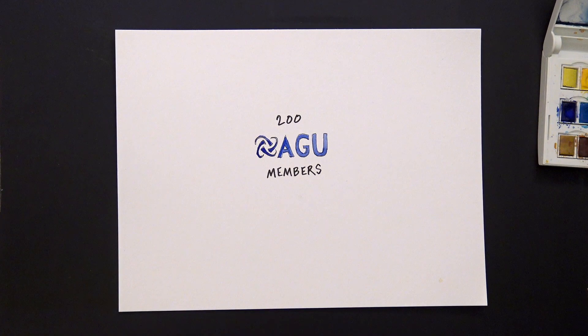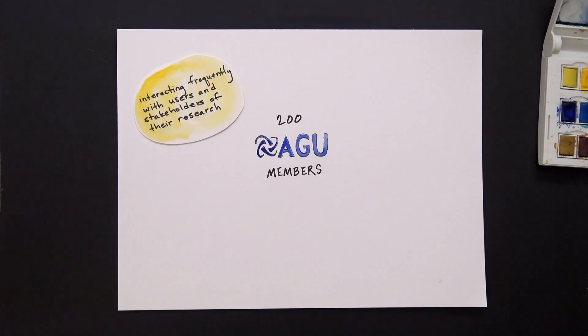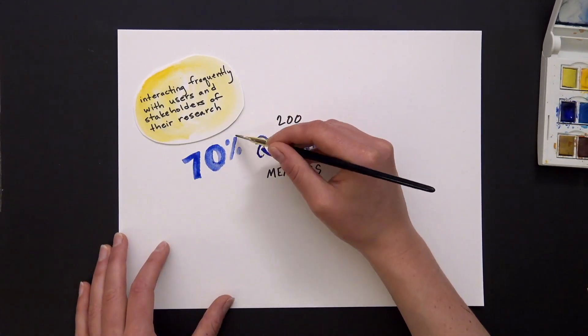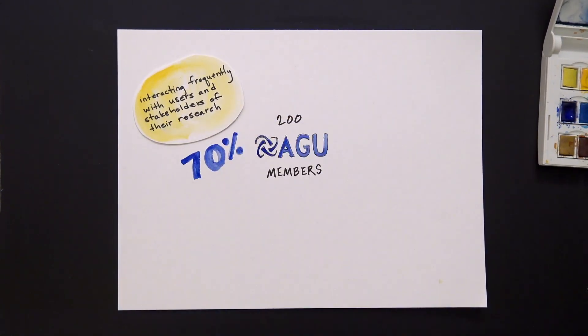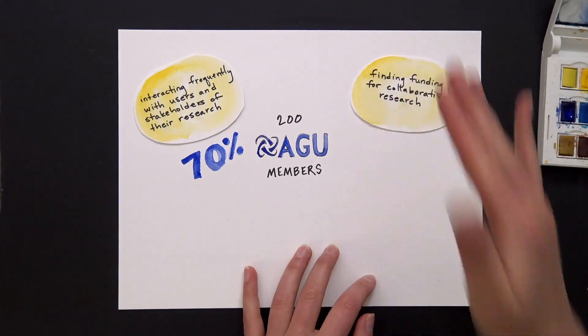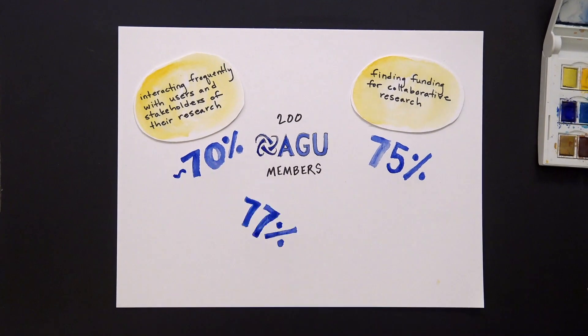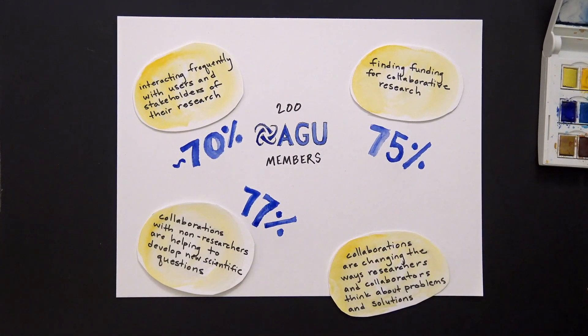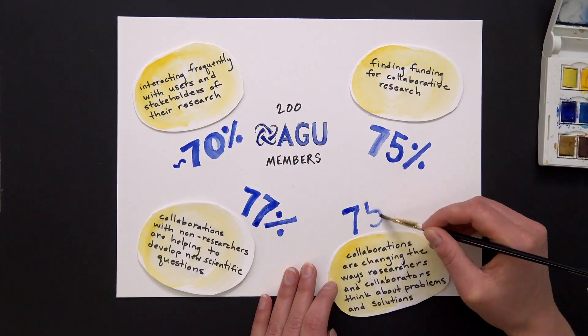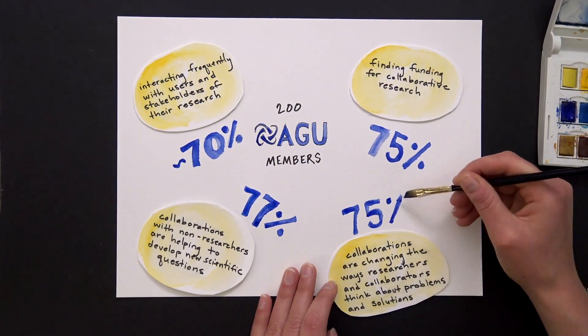a vast majority, that's 70% or greater, responded that they're interacting frequently with users and stakeholders of their research on quarterly intervals or more often. They're finding funding for collaborative research. Collaborations with non-researchers are helping to develop new scientific questions. Collaborations are changing the ways researchers and collaborators think about problems and solutions.